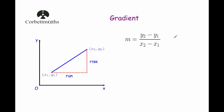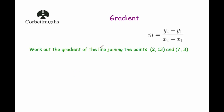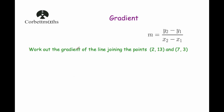Let's have a look at some questions using this formula. Our first question says: work out the gradient of the line joining the points (2, 13) and (7, 3). The first thing I do is label the points x1, y1 and x2, y2. Note that if you labelled them the other way around you would still get the same answer, so don't worry too much about which way around you label the points.